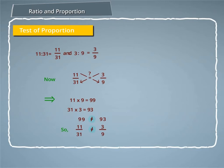So, 11 by 31 is not equal to 3 by 9, or we say 11 is to 31 is not equal to 3 is to 9. Hence, 11 is to 31 and 3 is to 9 do not form a proportion.